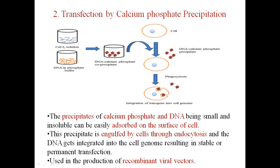Transfection by calcium phosphate precipitation is another chemical method for gene transfer. Here a precipitate of calcium phosphate and DNA is formed, which can be easily adsorbed on the surface of the cell. You can observe in this figure how the complex of DNA and calcium phosphate is adsorbed on the cell membrane, and phagocytosis causes the cell to engulf this complex and enter the DNA into the cytoplasm.